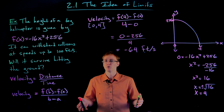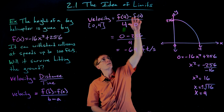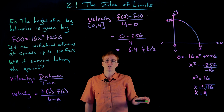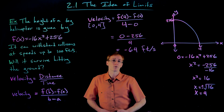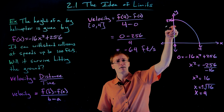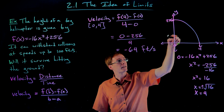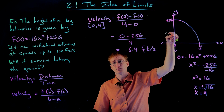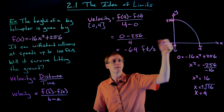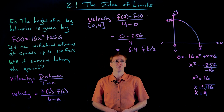The average velocity means: if the object fell at a constant 64 feet per second, it would take four seconds to go from top to bottom. But with projectile motion, the object doesn't move at a constant rate. When it first starts falling, it moves rather slowly, and as it falls due to gravity, its speed increases. So at the moment of impact, it's probably falling faster than 64 feet per second.